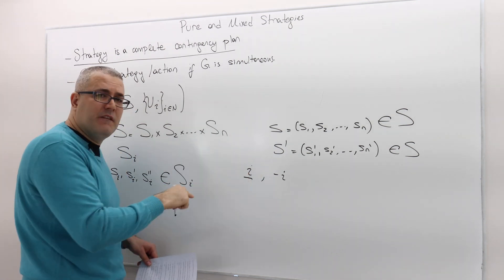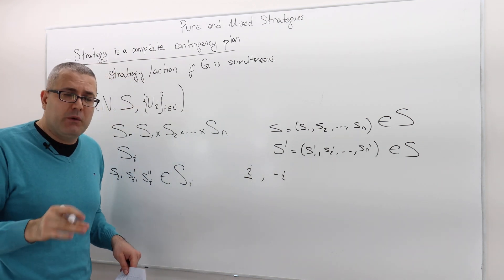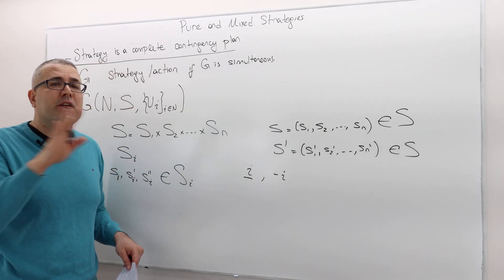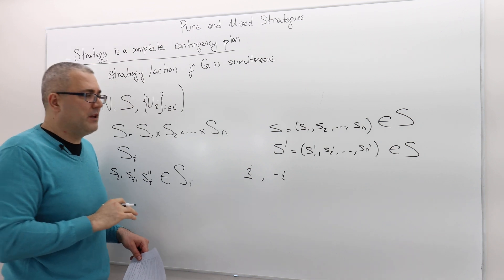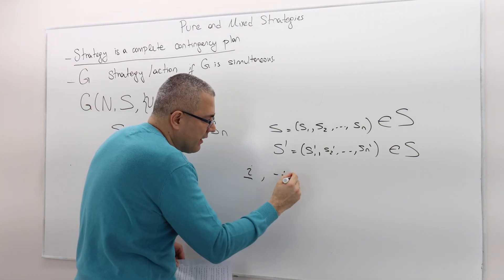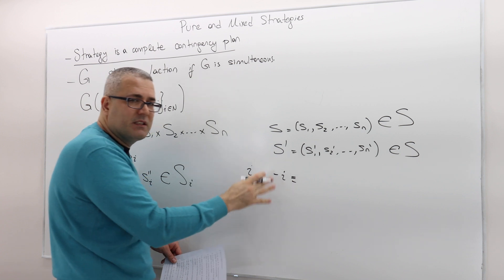This is just one individual. But minus I doesn't refer to an individual. It refers to everybody except player I. In a sense, they're not the same thing. For that reason, I use this equivalence relation. They mean the same thing.